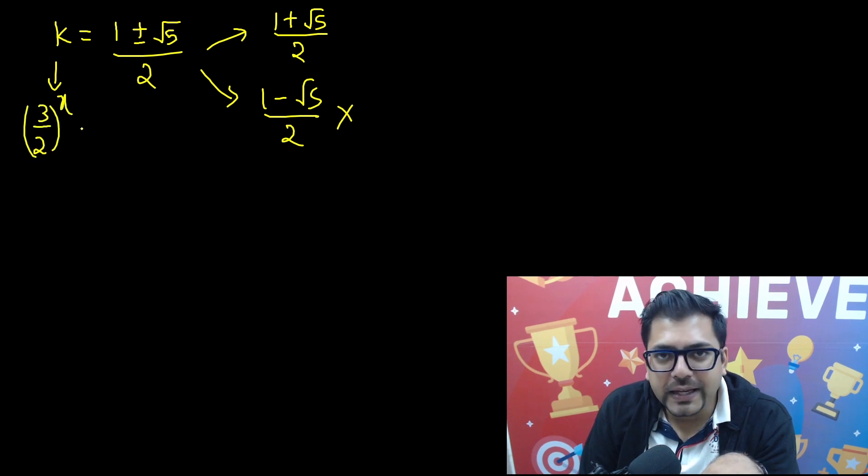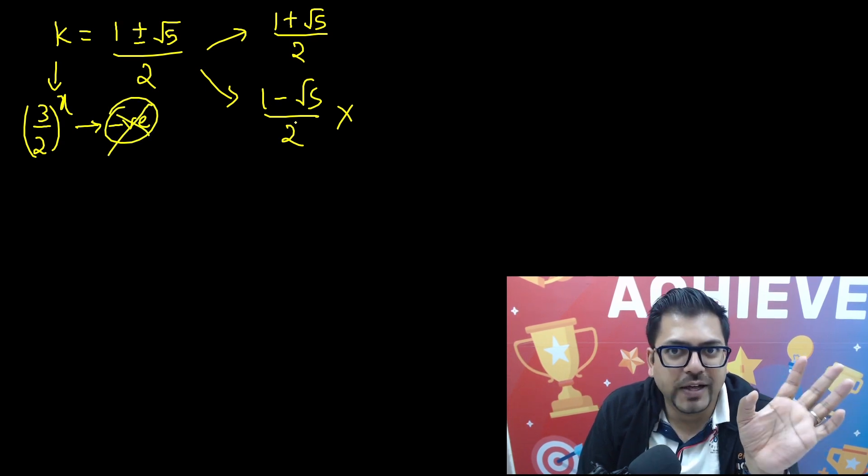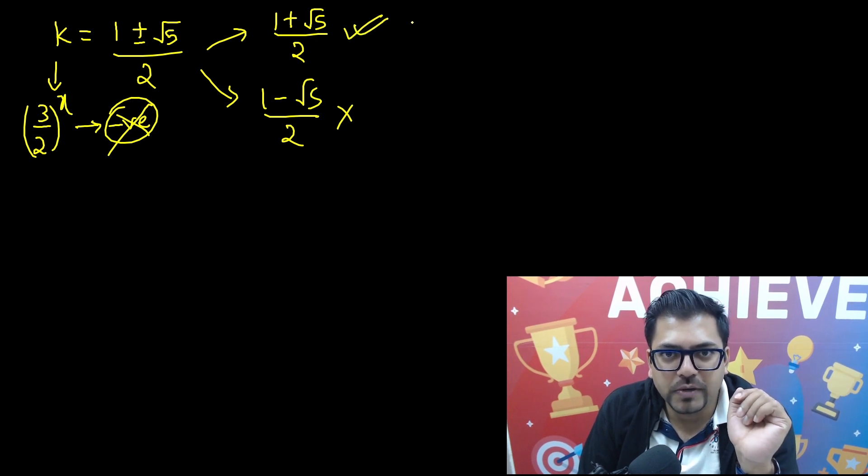So this value we won't be able to take because k is 3 upon 2 whole raised to power x, and any exponent number can never be negative. Negative is not possible, so this 1 minus root 5 divided by 2 is not a possible value.